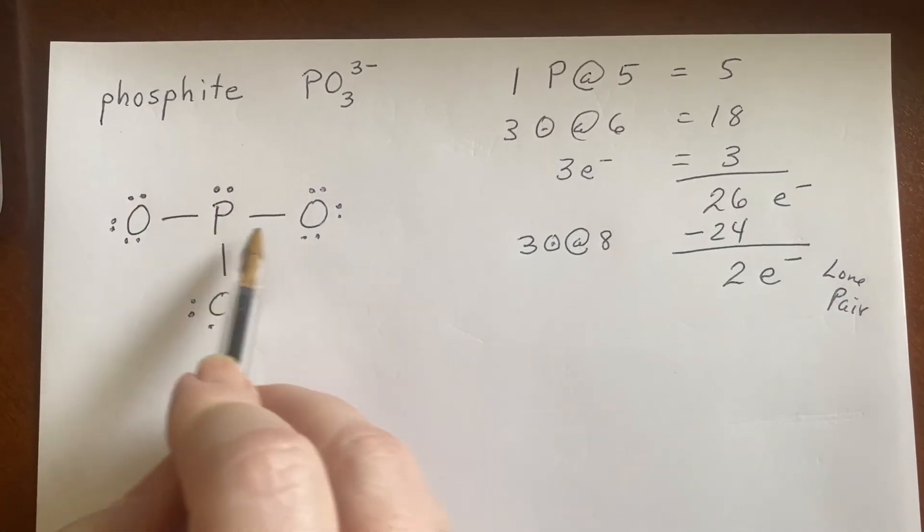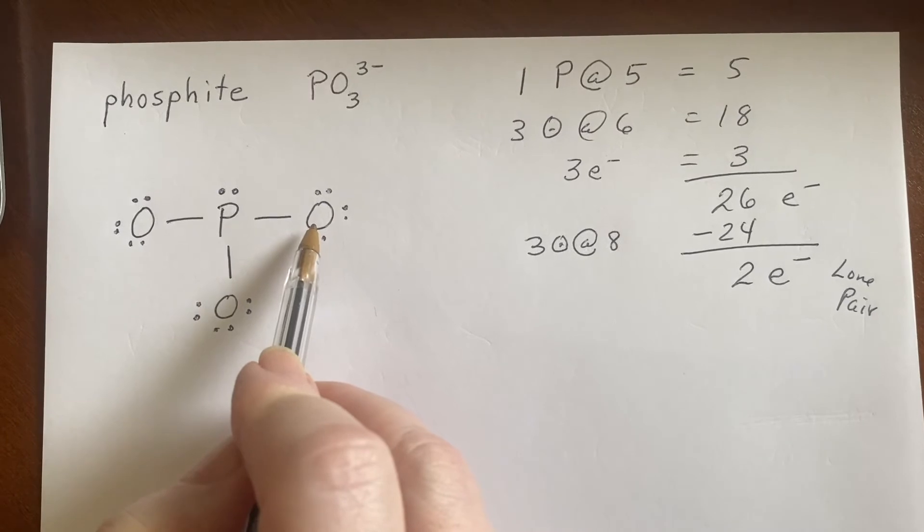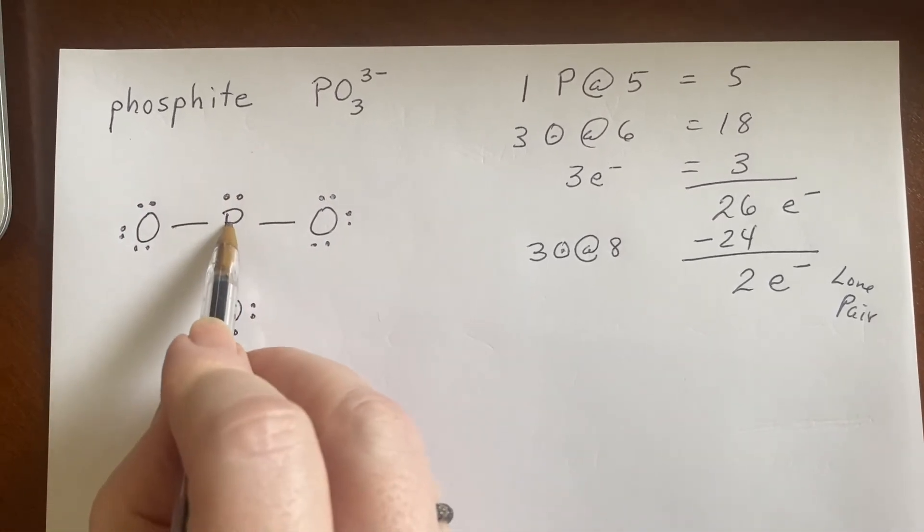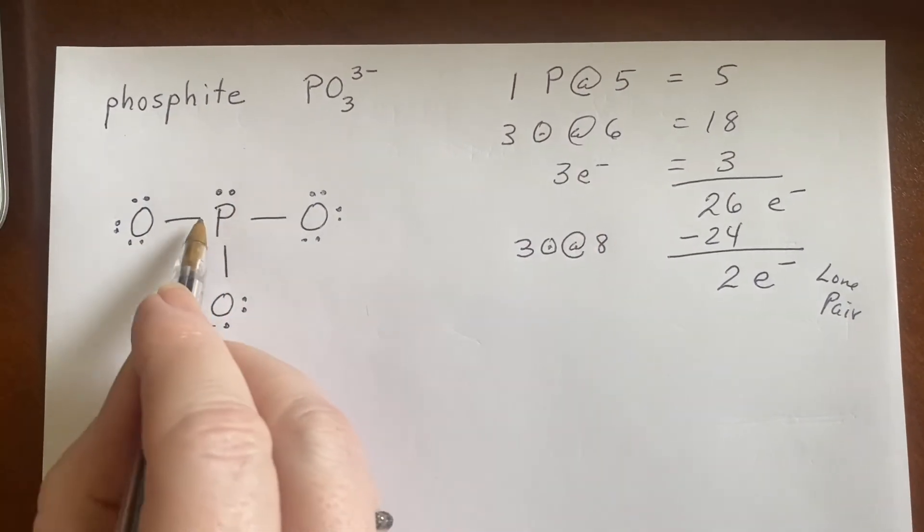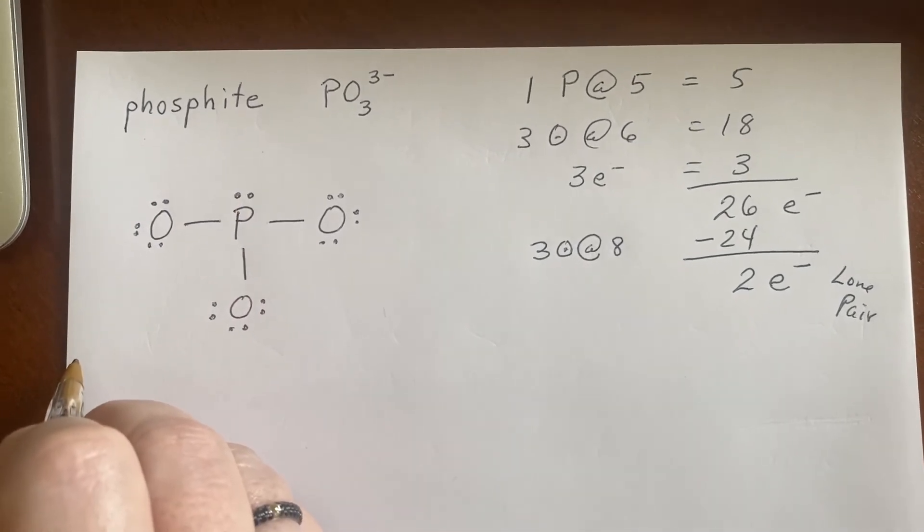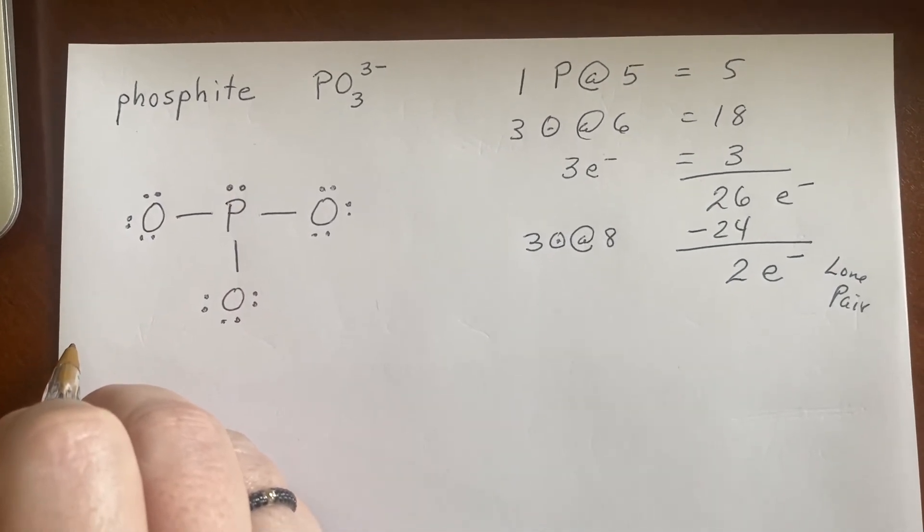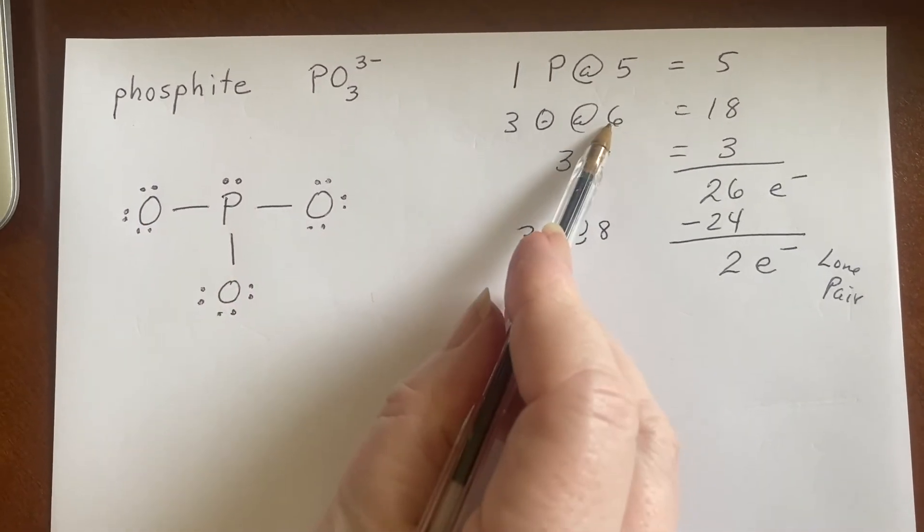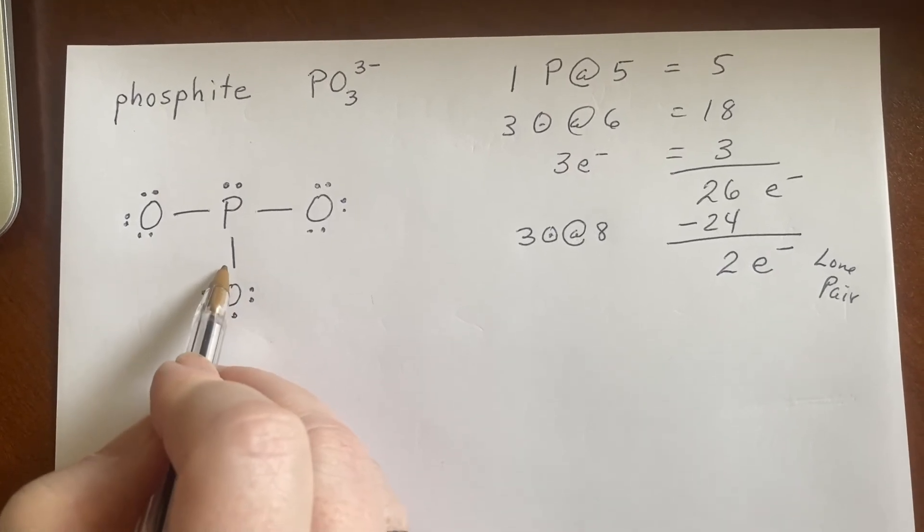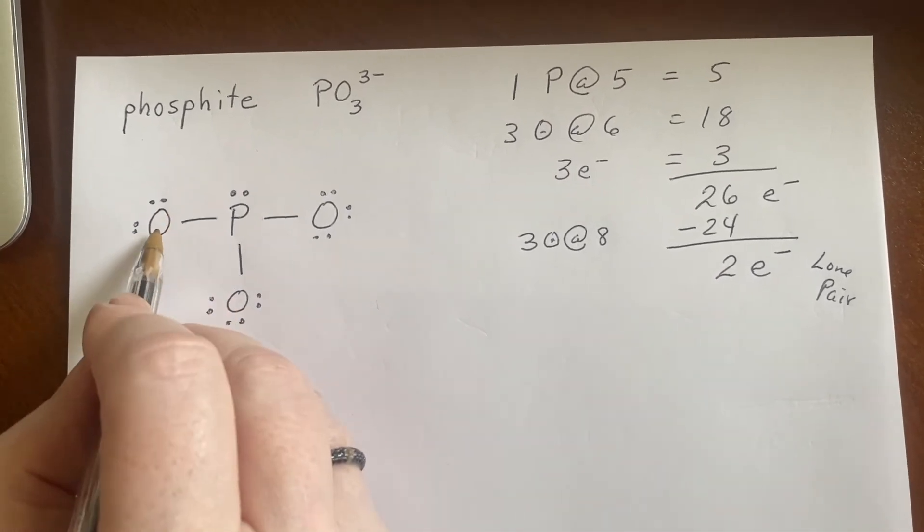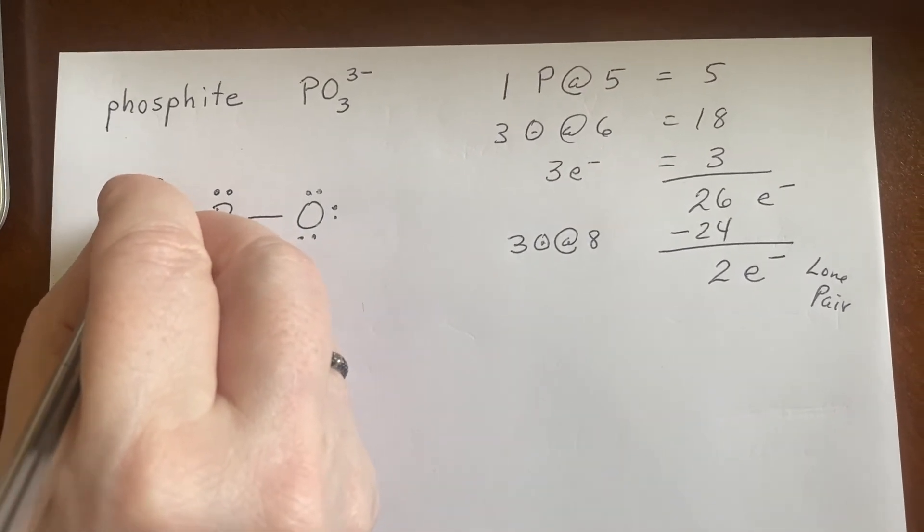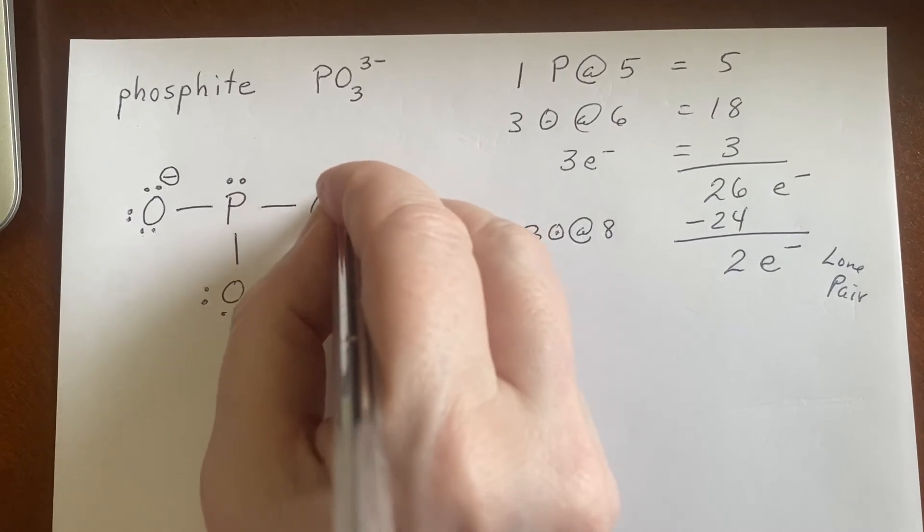Now, we are going to also go back and calculate the formal charge to make sure that this makes sense. Phosphorus came in with five and it now has one, two, three, four, five. Formal charge is zero on the phosphorus. That's fine. The oxygens each came in with six. Every one of these looks the same because it's a single bond to the phosphorus and then the rest of the lone pairs. So one, two, three, four, five, six, seven. So it has a formal charge that is a single negative.